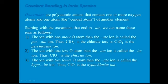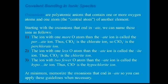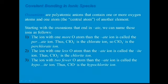The ion with two fewer oxygen atoms than the '-ate' ion is named 'hypo-' plus the root of the element plus '-ite'. So starting from chlorate, ClO3 negative, removing two oxygen atoms gives ClO negative with one oxygen, which is called hypochlorite ion. Don't forget to familiarize these naming rules.